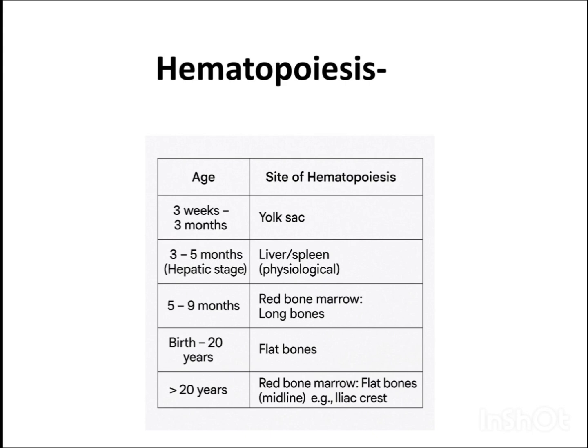Now coming to hematopoiesis. Hematopoiesis starts in the human fetus as early as 3 weeks. From 3 weeks to 3 months, the site of hematopoiesis is the yolk sac. From 3 to 5 months, hematopoiesis occurs in the liver and spleen. From 5 to 9 months, it occurs in the red bone marrow of long bones. From birth to 20 years, in flat bones. After 20 years, in the red bone marrow of flat bones like the iliac crest and sternum.